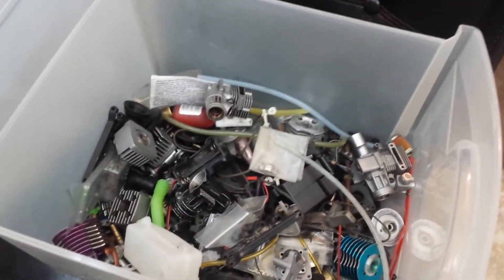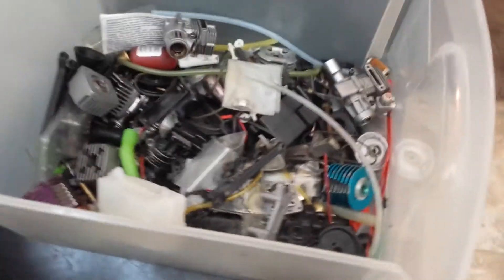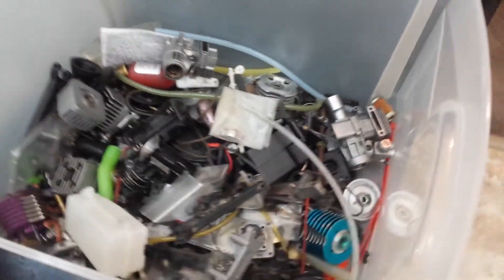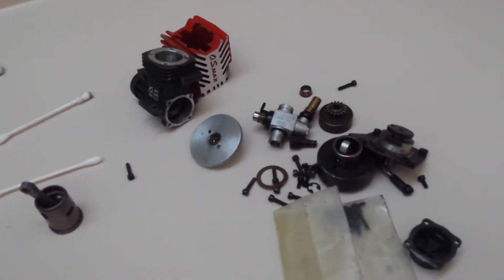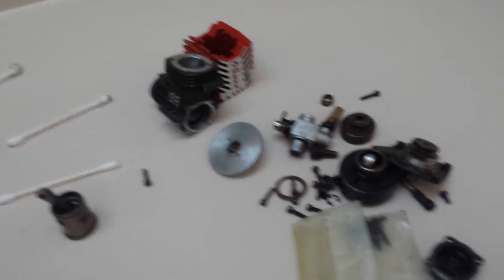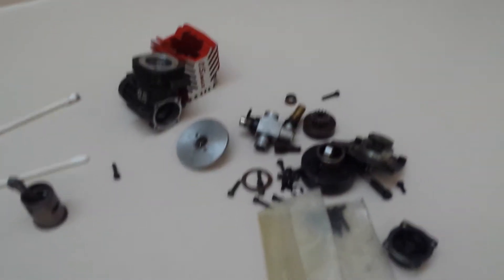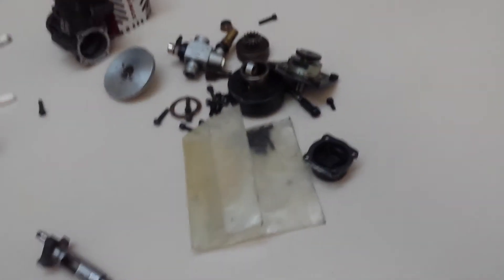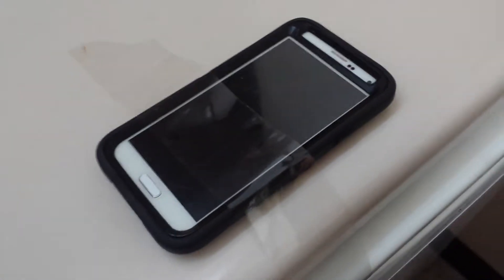Okay, so today out of this box of junk parts I'm going to attempt to salvage this dead OS 12 CV that I got in that RC 10 GT last week. This is my camera mount - every time you see me filming, there's a piece of packing tape and my Galaxy S5.